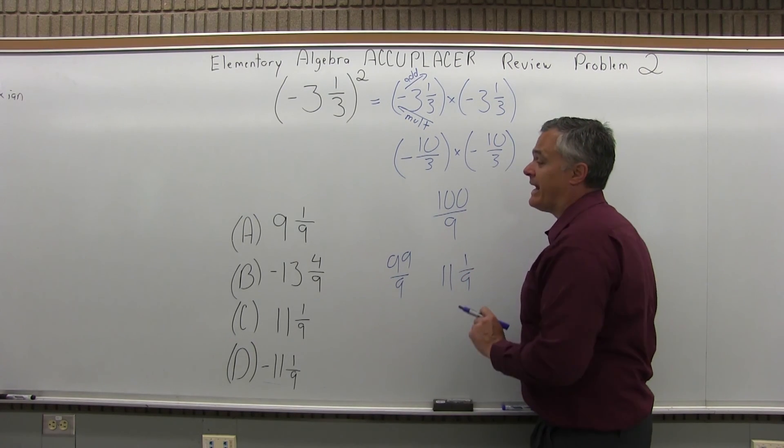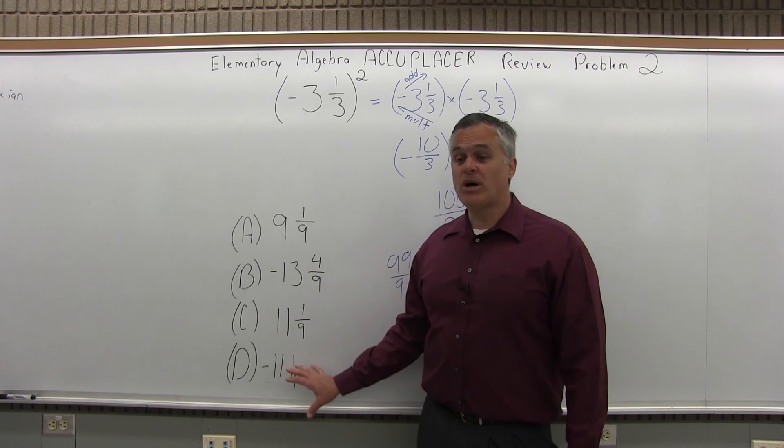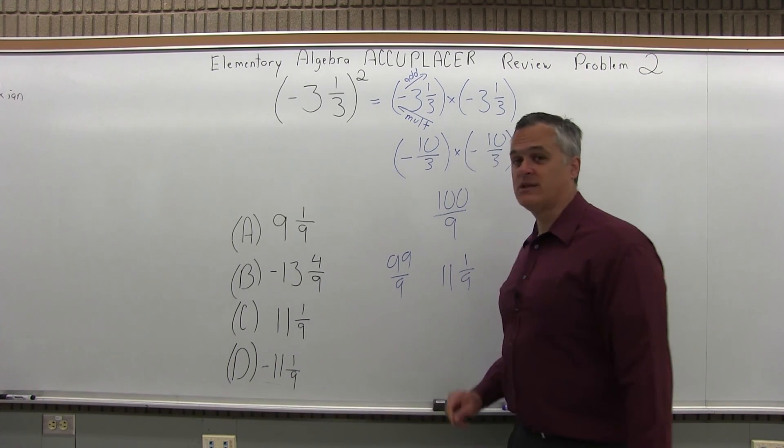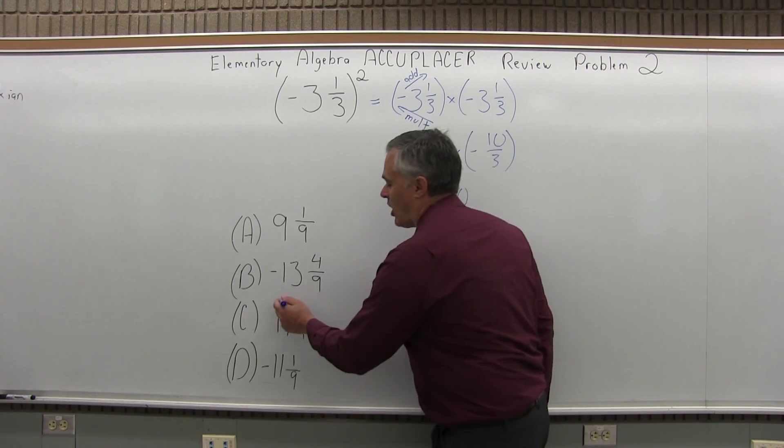So, I have positive 11 and one ninth. Now, as I look at my possible options, I do have a perfect match for positive 11 and one ninth. That's option C.